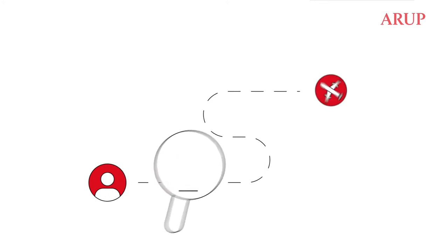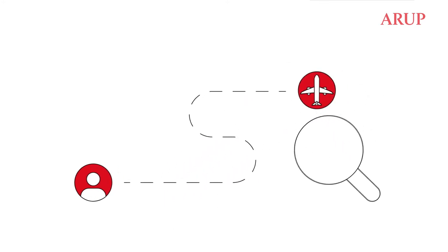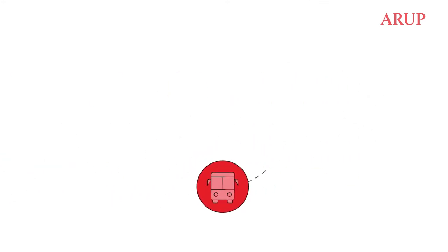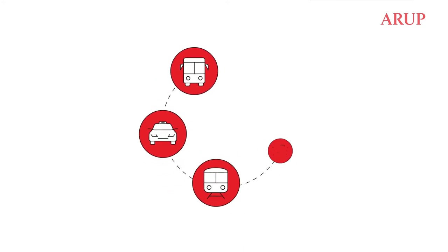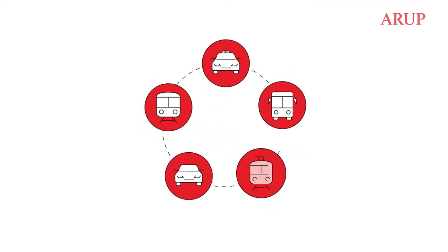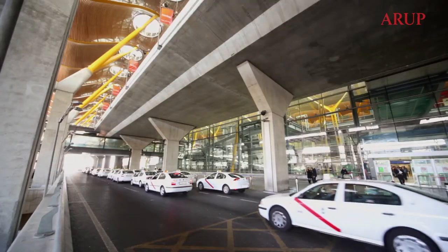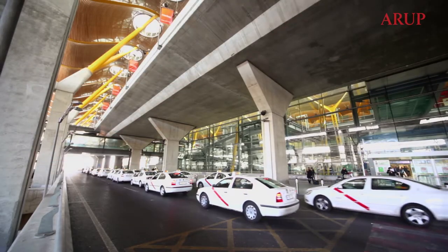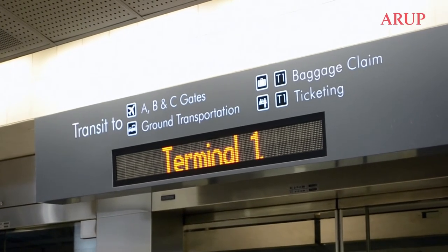This is our Airport Surface Access Analyzer. For operators, understanding their passengers' journey to and from the airport is vital. Airports are served by buses, taxis, light rail, private cars and metro systems. Our tool helps airports understand the demand placed on these services, and how different solutions can improve performance.